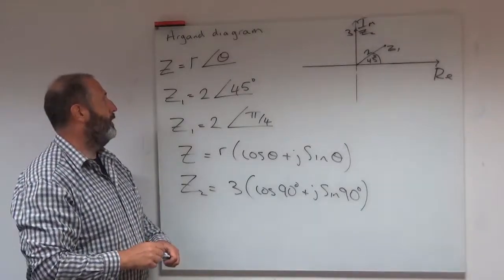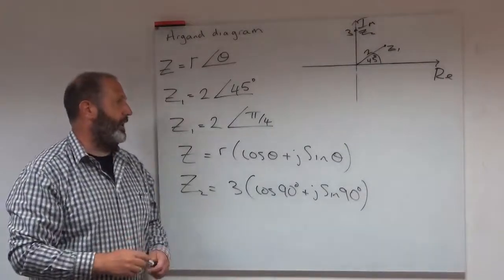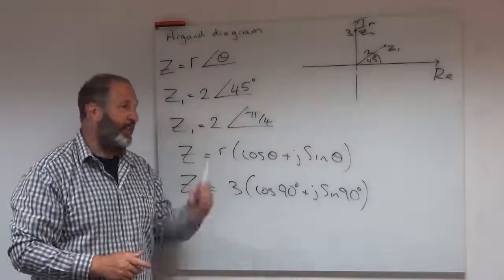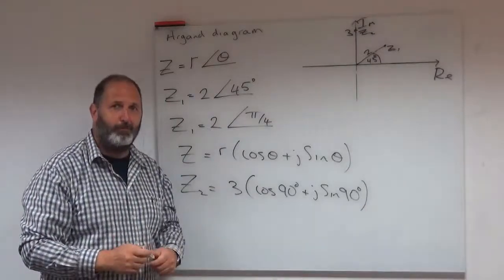So that's how we might plot on an Argand diagram when we have our complex number in this particular form, polar form. Thanks a lot.